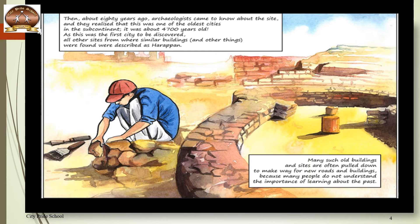The next question: why do we call it the Harappan Civilization? Because Harappa was the first city to be discovered from this civilization. Also, things found in Harappa can be related to things found in Mohenjo-daro, similarly related to Lothal, Dholavira, and other places. So this entire set of cities was also known as the Harappan Civilization.